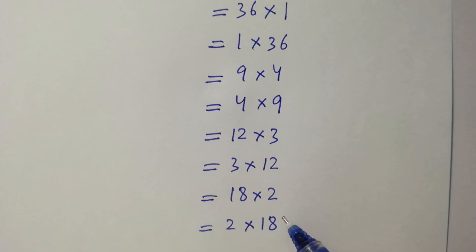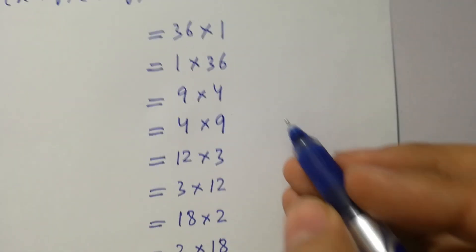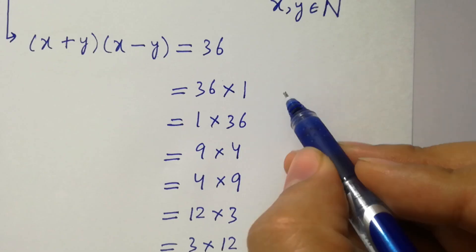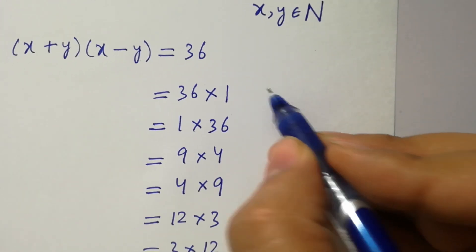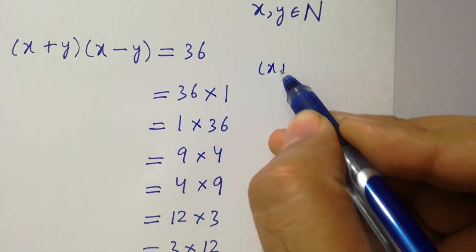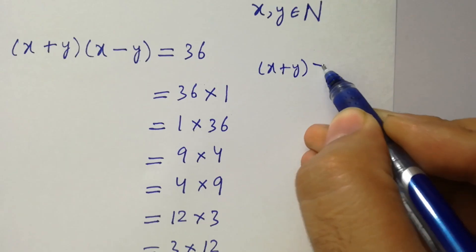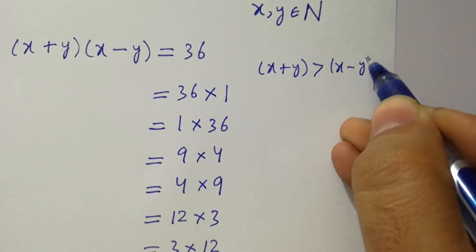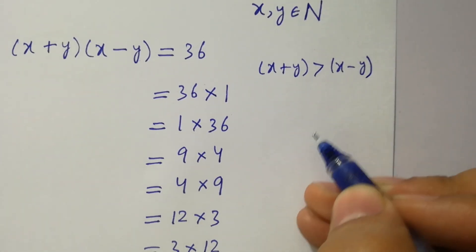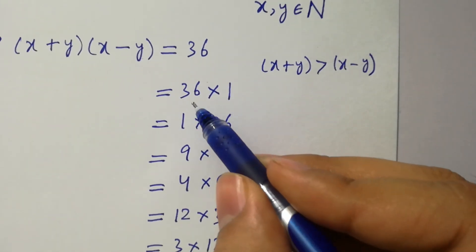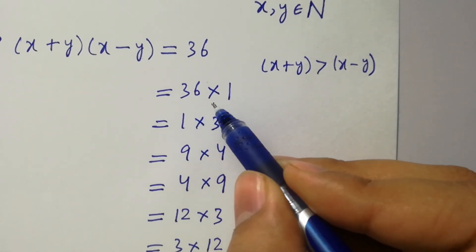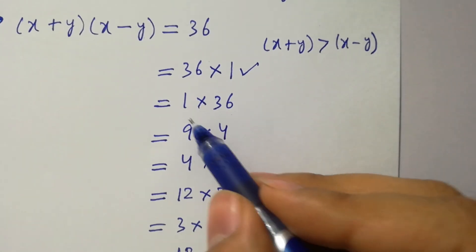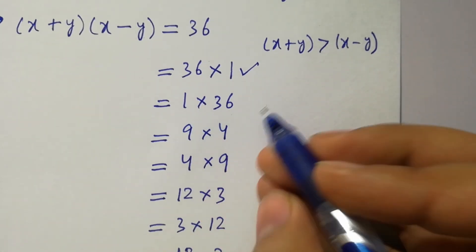By comparison, x plus y is greater than x minus y. According to that condition: 36 is greater than 1 — this is possible. 1 is less than 36 — not possible.